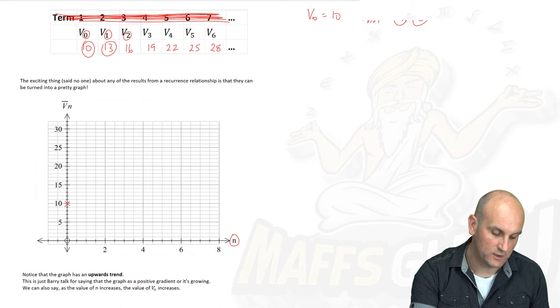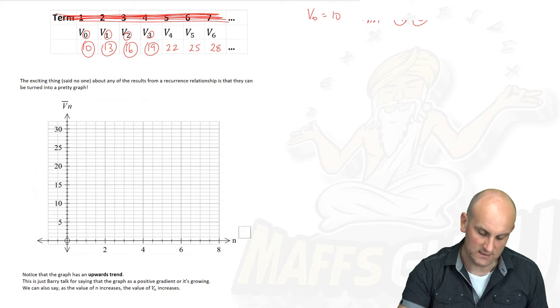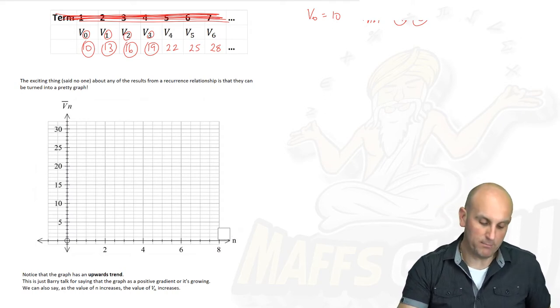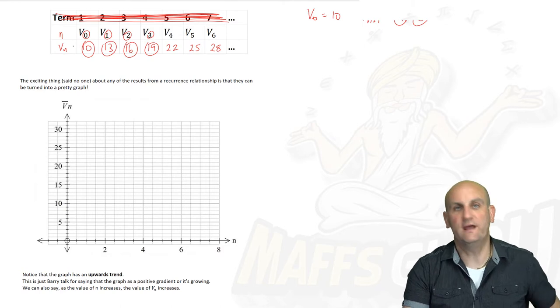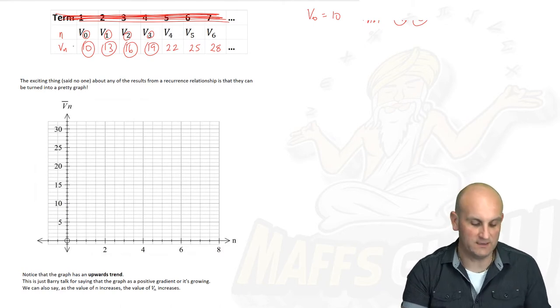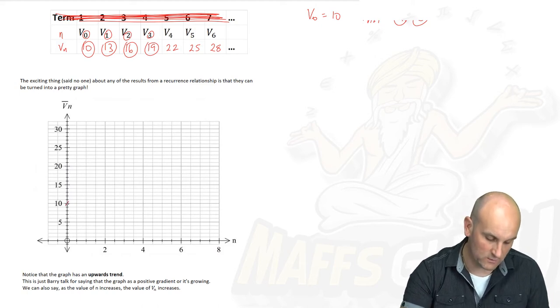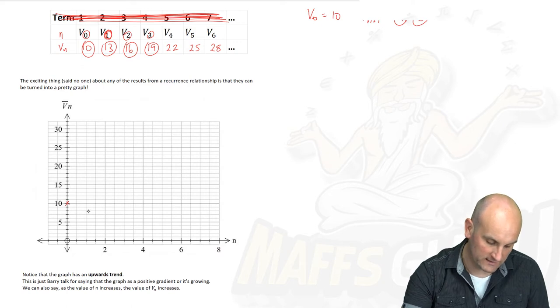So 0, 10, 1, 13, 2, 16, 3, 19. So what I'm going to do, he says, rubbing off some of the previous work I was working on, is I'm now going to plot the value of n, which is here, against the value of Vn, which is here. Now that's just language for Barry. So what I'm saying is when n is 0, I'm going to plot the value of 10. So 0 and 10. Here we had a value of 1. I'm going to plot that against 13, which is actually there. 2 is going to go against 16.